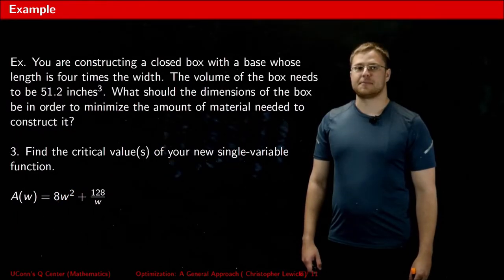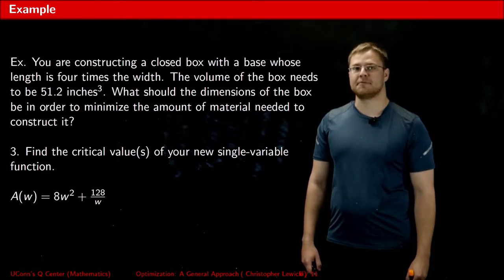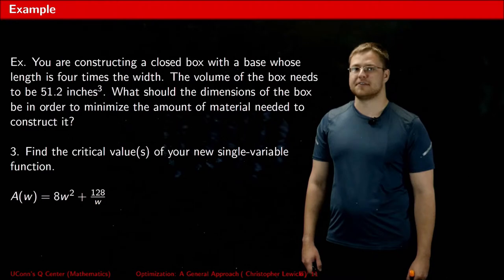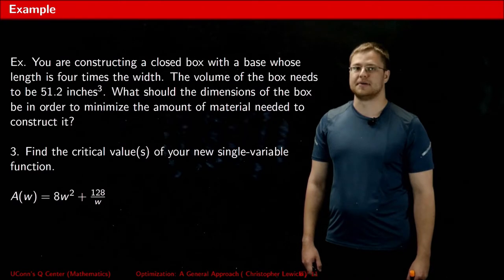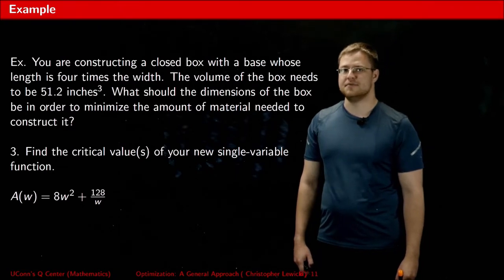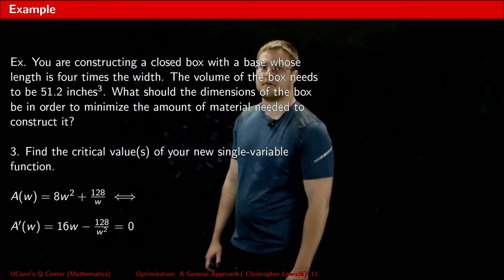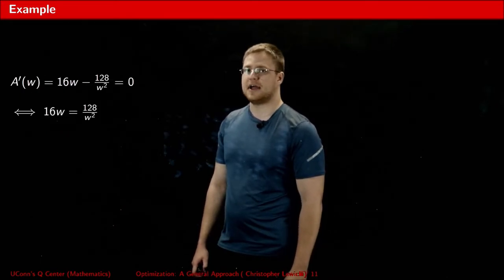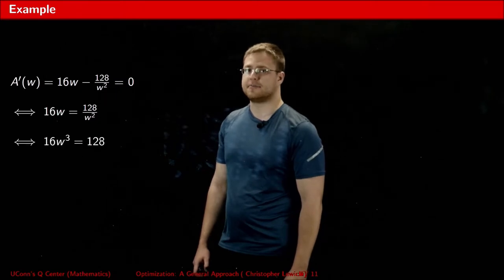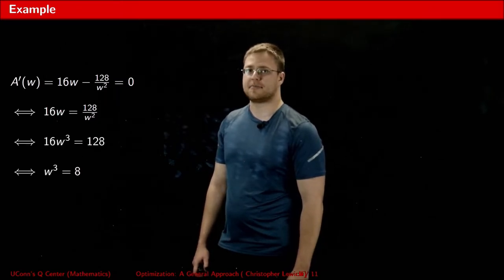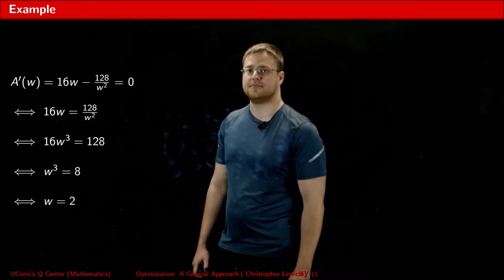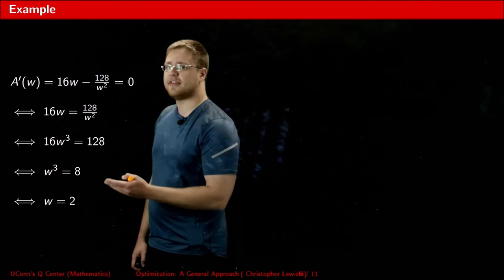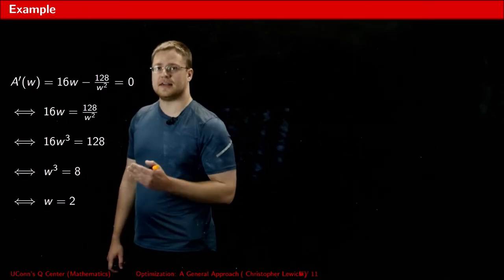Step three of the five step process is to find the critical values of your to be optimized function. Since in this problem we're trying to minimize the surface area of a box, we need to find a critical value that is also a local minimum. To find the critical values of a function, as you probably already know, the first thing you need to do is take its derivative and set it equal to zero. From this point onward, it's just algebra to solve for your variable. I bring the fraction over to the other side, I multiply both sides by W squared, I divide both sides by 16 to get the W cubed by itself, I cube root both sides to get W by itself. So what this tells me is the width being two is a critical value.